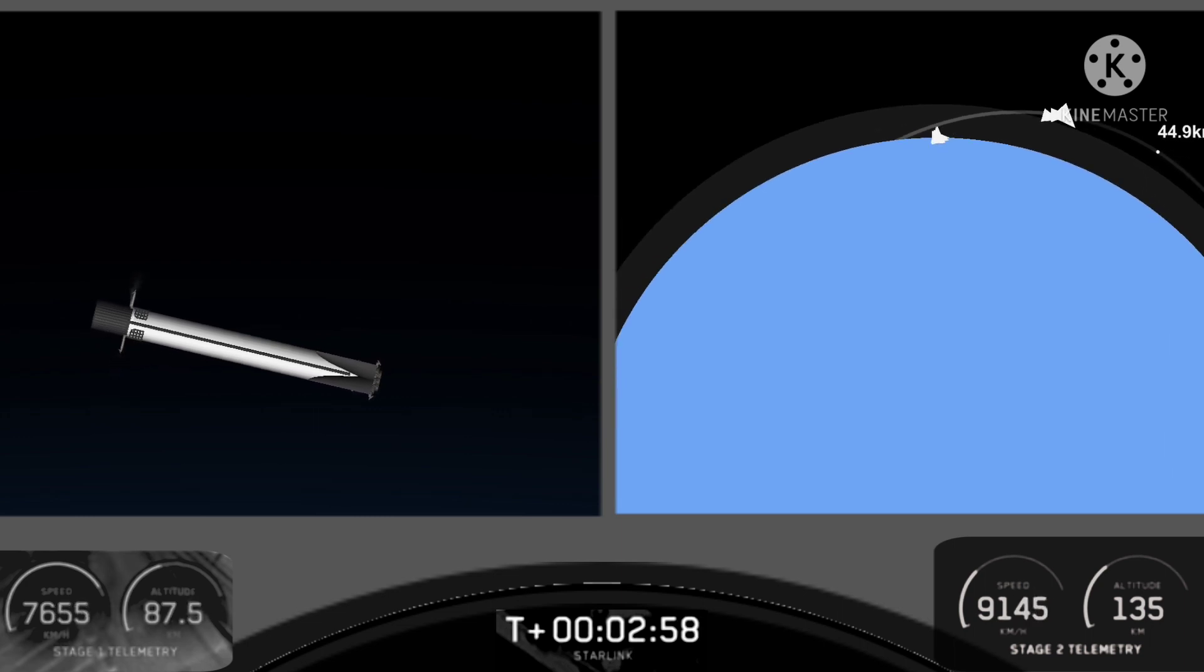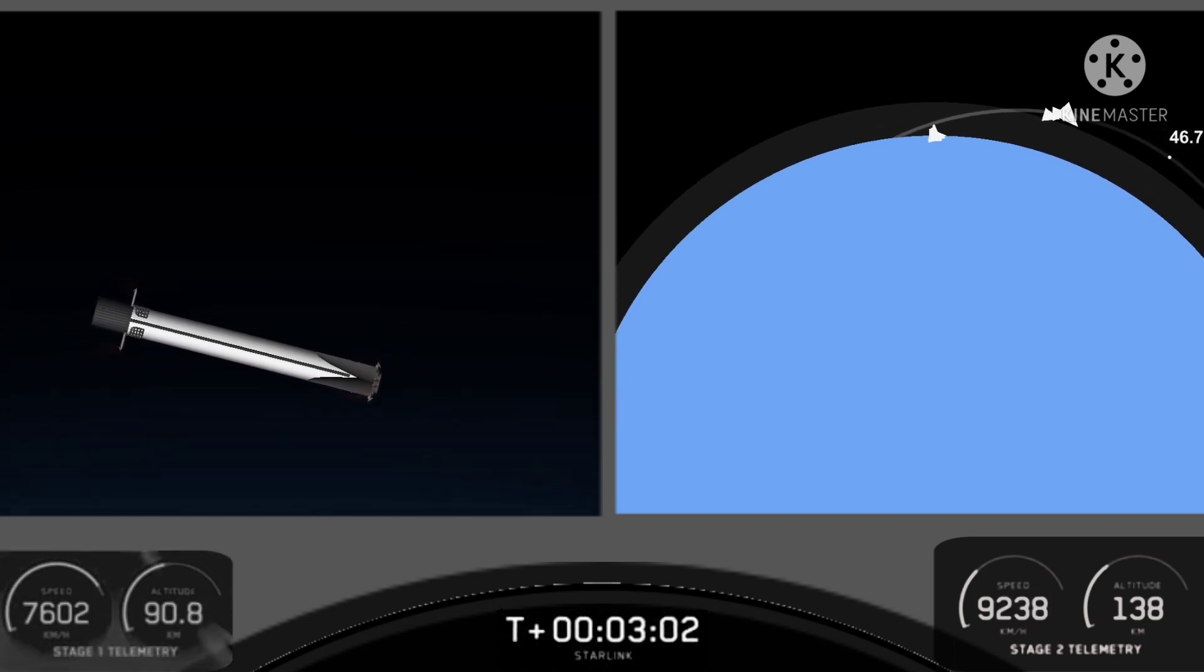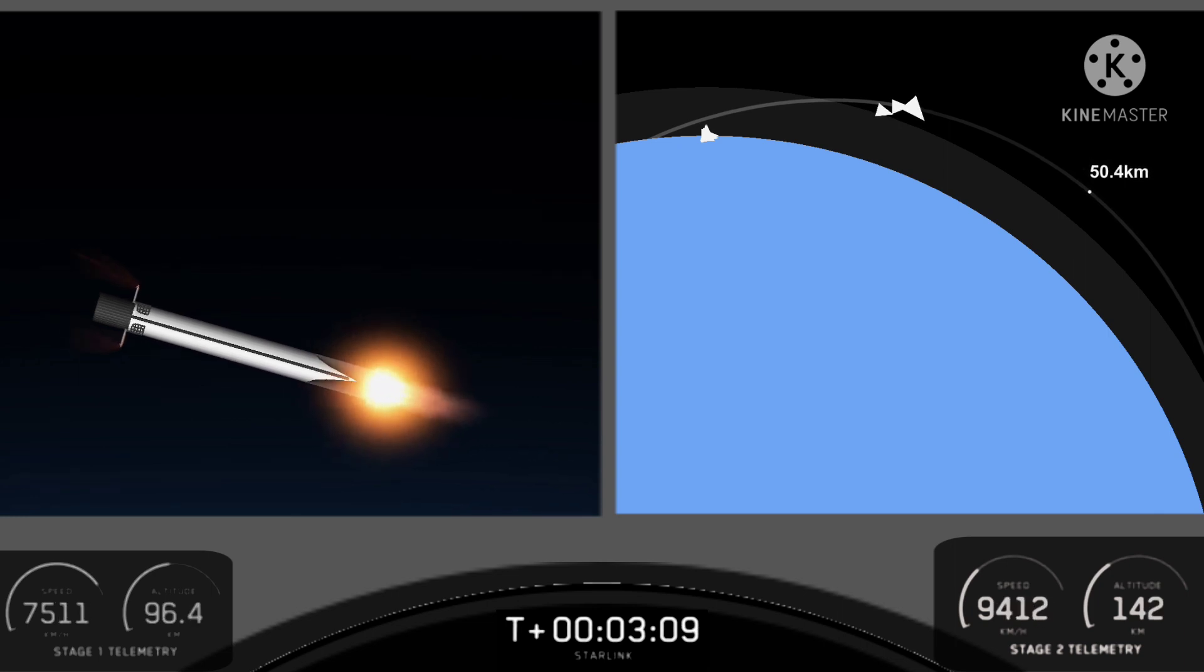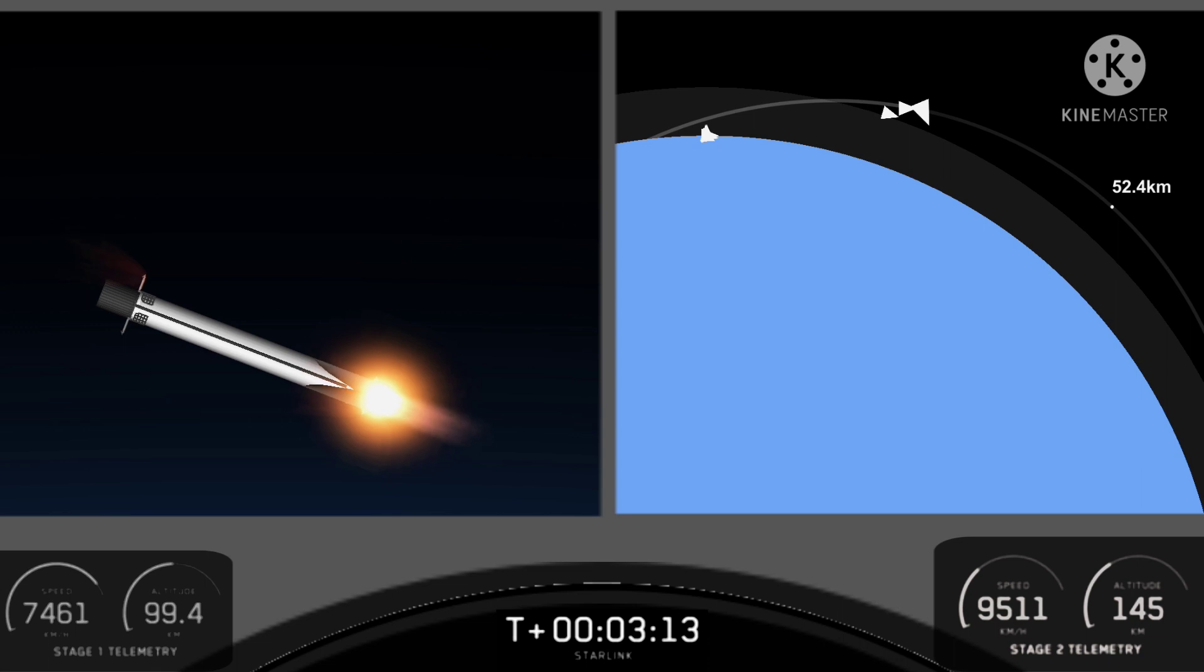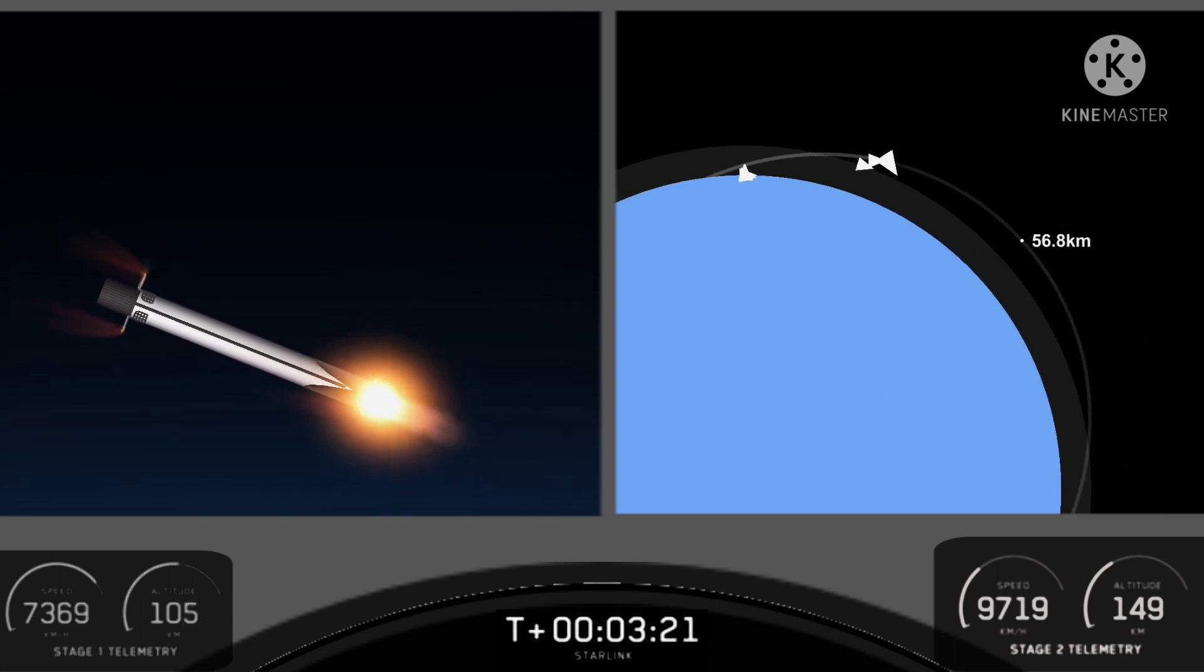We did have a successful main engine cutoff, stage separation, second engine start of the Merlin vacuum engine, and you just saw on screen that the fairing halves have been deployed from the top of our second stage. We've been flying reflown fairing halves since 2019, and today's fairings are flight proven. We're going to be attempting to recover them when they return to Earth as well.